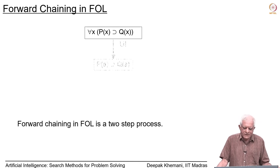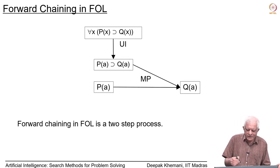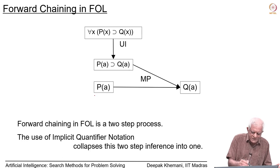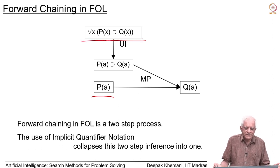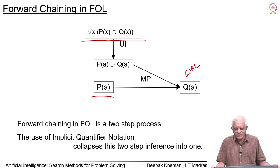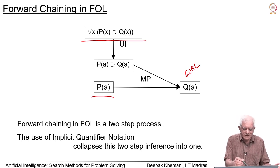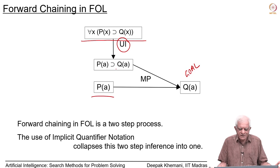This process is forward reasoning or forward chaining, and it is a two-step process for now. We are given P(a) and a universal statement for all x, P(x) implies Q(x), and our goal is to show Q(a). In the first step we apply universal instantiation to generate the specific statement P(a) implies Q(a), and then we use modus ponens to arrive at Q(a).